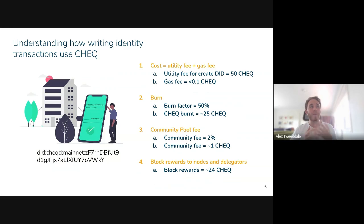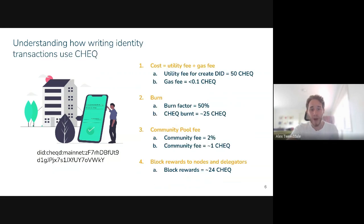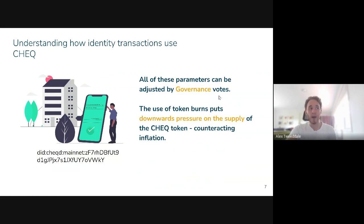We've updated our tokenomics recently to have this cascading fee, where the value of writing a DID will actually result in a lot more actions happening than just that. Introducing token burns puts downward pressure on the supply of the Check token, counteracting inflation. By doing so, we can bring the number of Check tokens in existence back down towards the initial 1 billion tokens issued at launch. It's also important to note that all of these parameters — creating a DID, updating a DID, the burn factor, the community pool fee — can all be adjusted in the future by governance votes, so you can propose and vote on how these fees change.